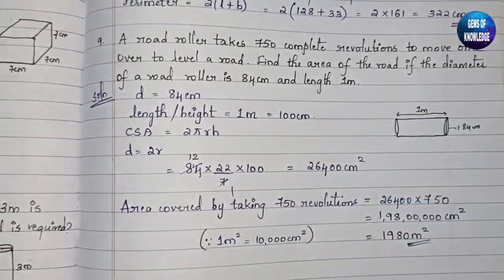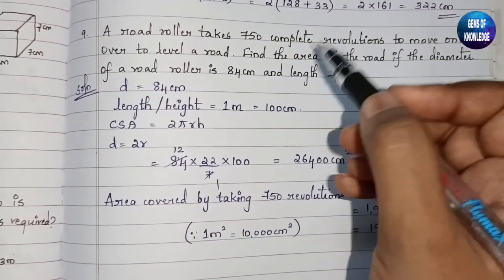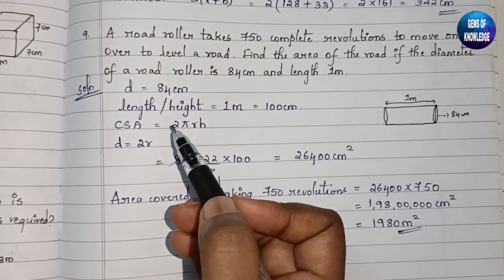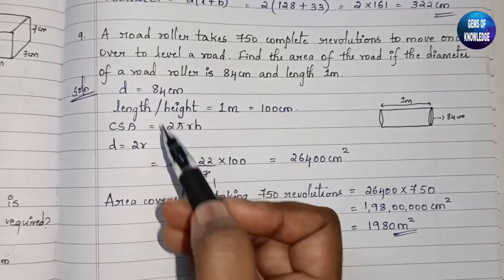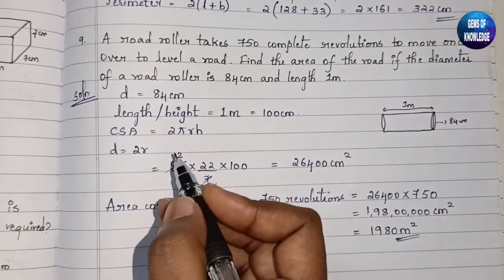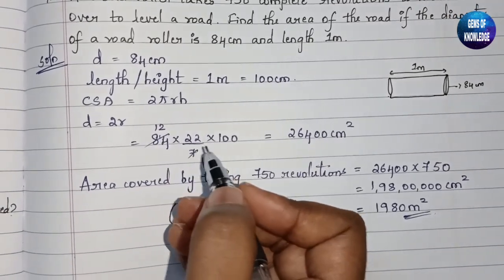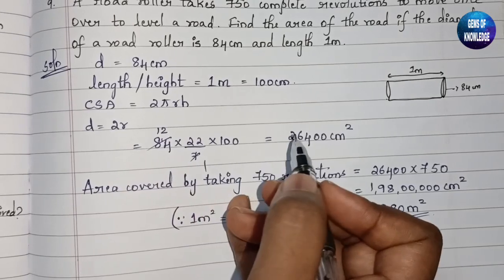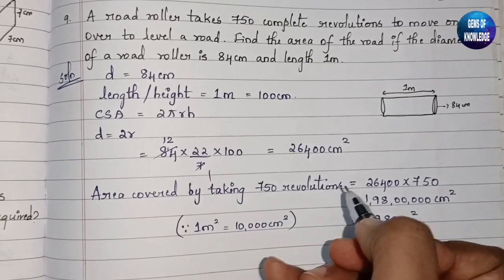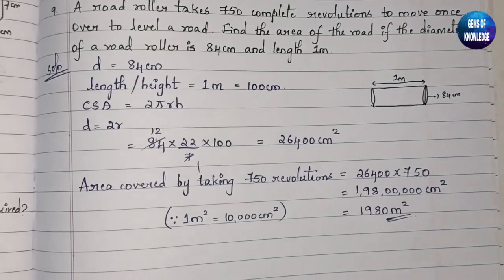We need to find the curved surface area because only the curved surface touches the road — not the top and bottom. CSA = 2πrh. Since d = 2r, we substitute directly: CSA = 84 × (22/7) × 100. The 7s cancel: 12 × 22 × 100 = 26400 cm². Area covered in 750 revolutions = 26400 × 750 cm².